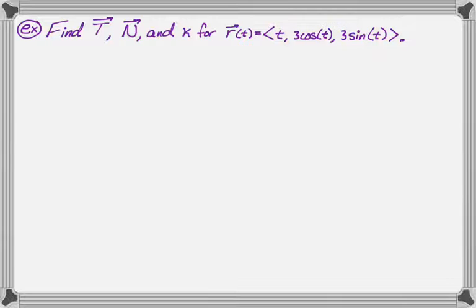So we're gonna find T and the curvature for r(t) equals t comma three cosine of t comma three sine of t. So it's kind of a corkscrew curve, or maybe you'd call it a helix.